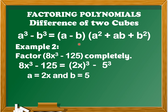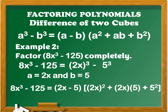Next, we're going to determine the value of (a minus b) and (a squared plus ab plus b squared). So we have 8x cubed minus 125 is equal to (2x minus 5) — this is the value of a minus b, since the value of a is 2x and the value of b is 5. For a squared, we have (2x) squared; plus ab which is 2x times 5; plus b squared which is 5 squared.